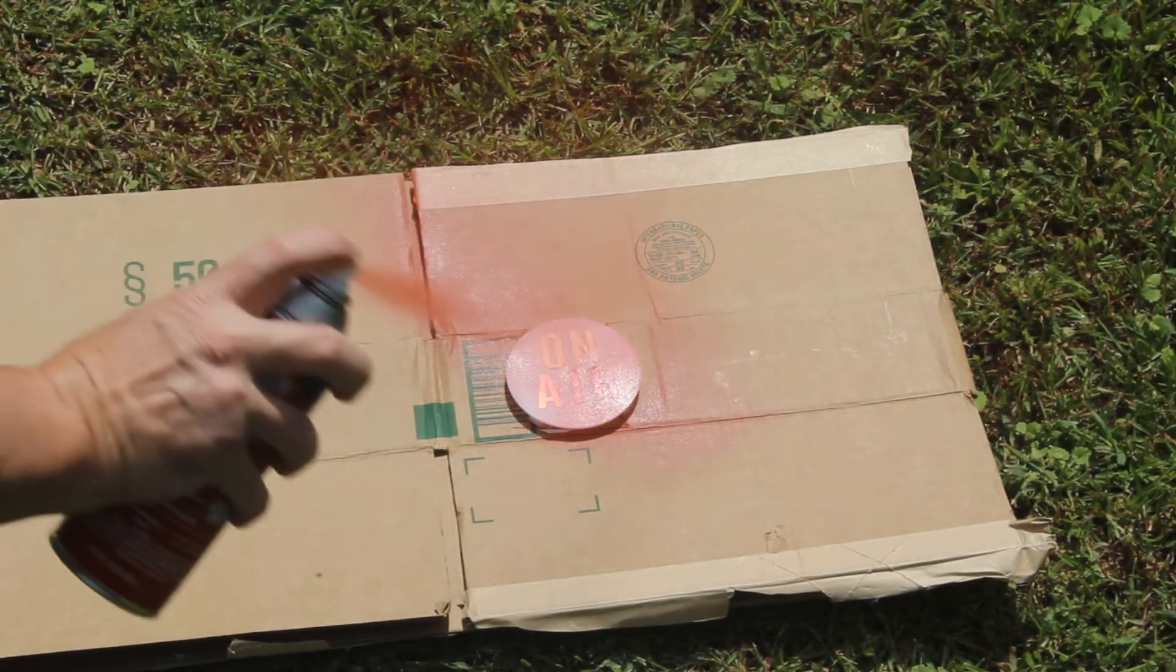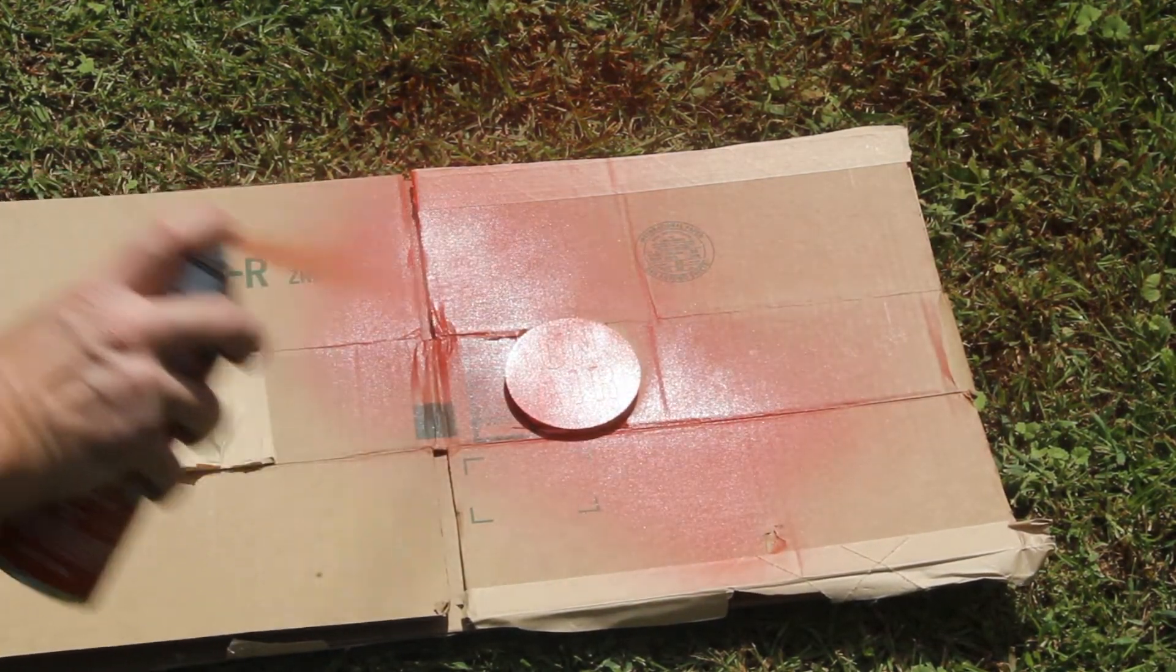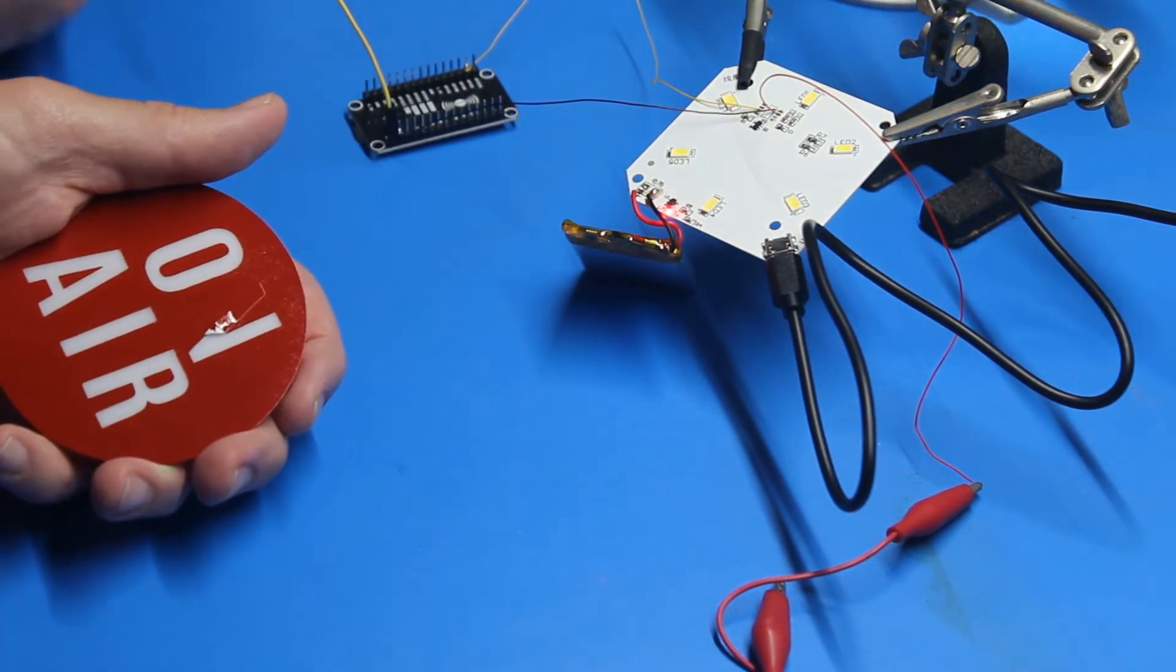I intended to use the lettering as a mask, so I took the cover outside and spray-painted the whole thing red. When the paint was dry, I removed the stickers and ended up with a red indicator with frosted white lettering. Nice.